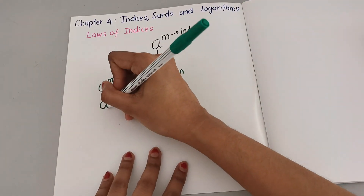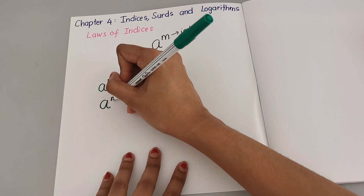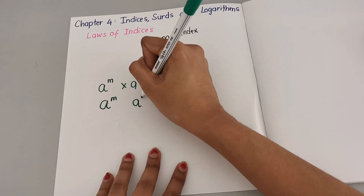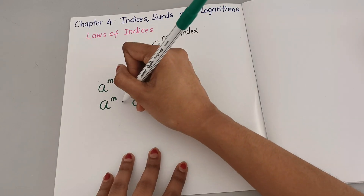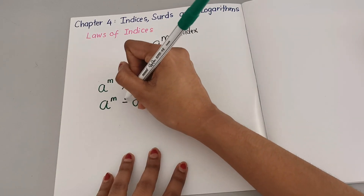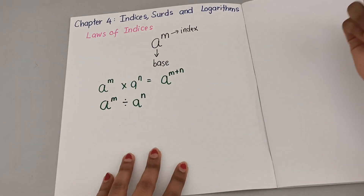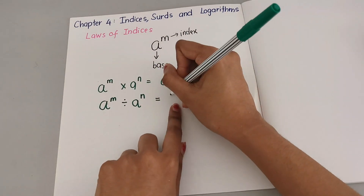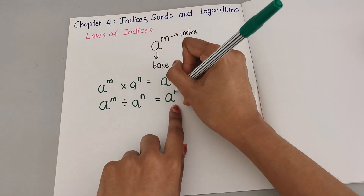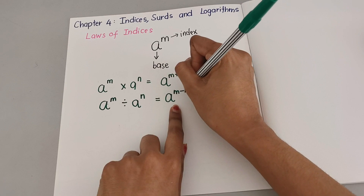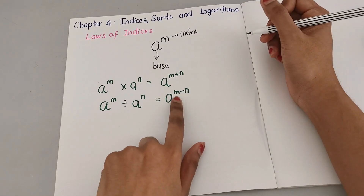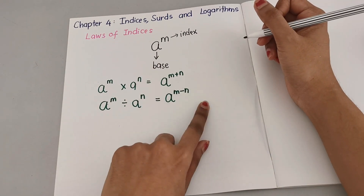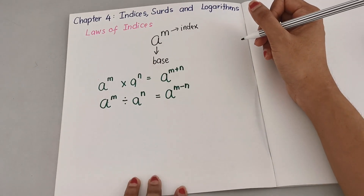Next, let's say you have the same base but a different index and this time it's divide. If it's divide, you are going to minus — take the power, the index, and minus.